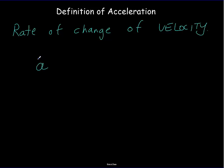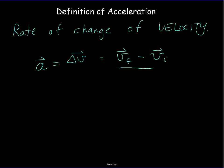As an equation, acceleration as a vector equals the change in velocity, which we write as delta v. A change in any quantity is the final value minus the initial value — and here those quantities are vectors. Whenever we say something is a rate, that means we're finding how much of something changes per unit time — in other words, we're dividing by delta t, the amount of time it took to change from the initial velocity vector to the final velocity vector.